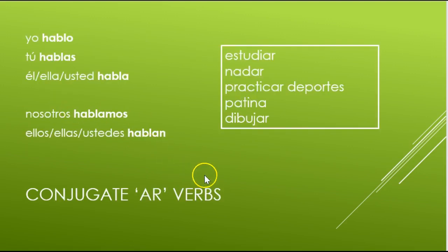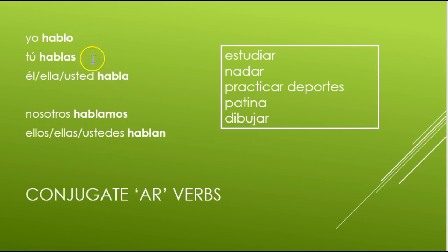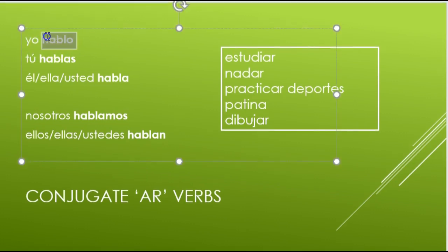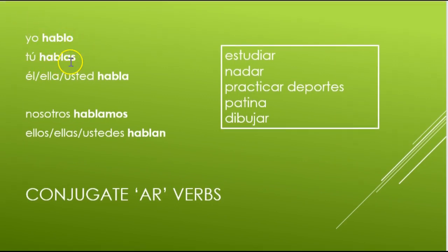Make sure you can conjugate AR verbs. We're going to conjugate the verb hablar — H-A-B-L-A-R — which means to speak or to talk. That's called an infinitive because it has not been conjugated with any person yet. In English we use 'to' in front of the verb; in Spanish, AR verbs use the ending AR. So: yo hablo — to say 'I speak' you can just say hablo. Tú hablas — you speak or you talk. You don't need to say tú unless you want to emphasize or clarify.